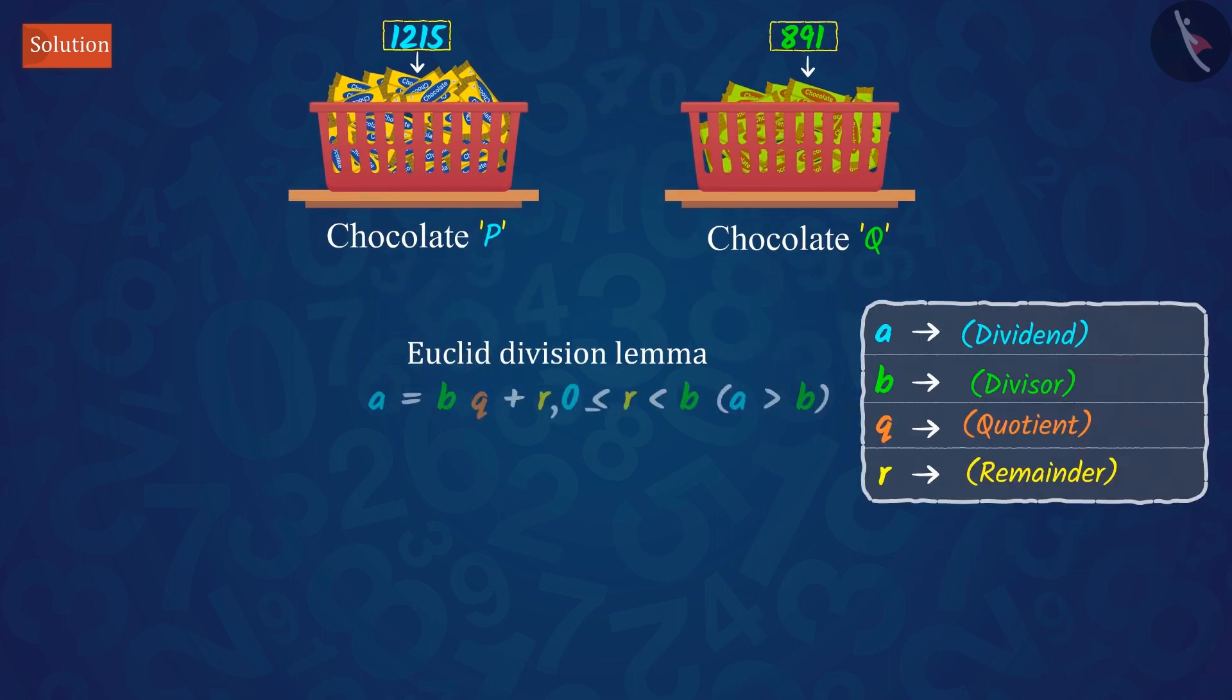For this, we will use Euclid's division lemma: a equals b multiplied by q plus r. Let's try to solve it together.